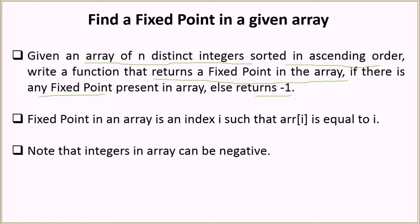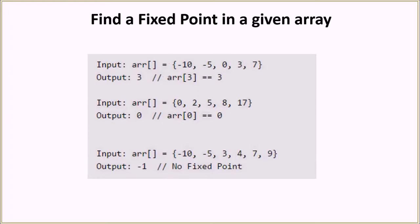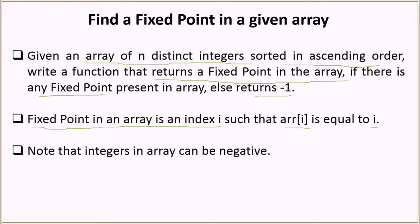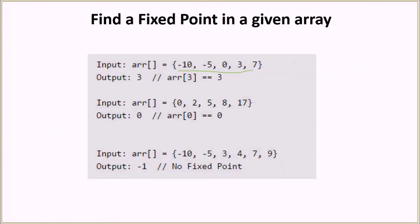First of all, what is a fixed point? A fixed point in an array is an index i such that the element at index i is equal to i. Note that the problem statement says arrays should have n distinct integers, so you cannot have repeating integers, and they should be sorted in ascending order.